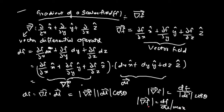This is the physical significance of the gradient of a scalar function. The gradient of a scalar field is a vector field whose magnitude and direction are both significant. The direction of del F is given by the unit vector del F / |del F|, and the magnitude is dF/dl max.